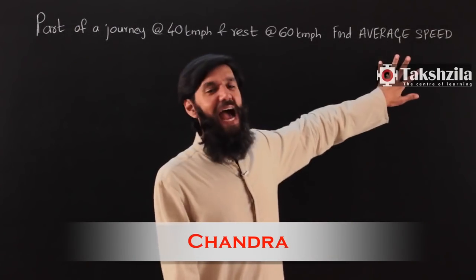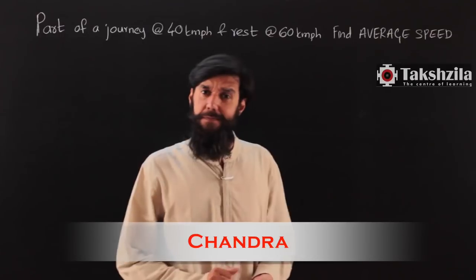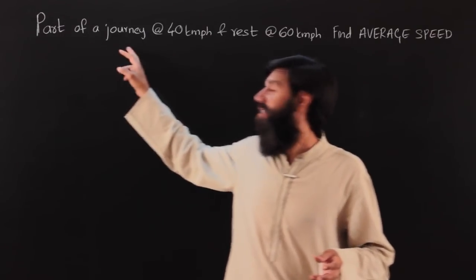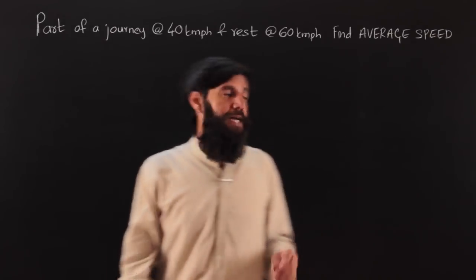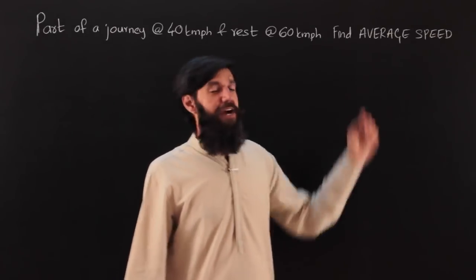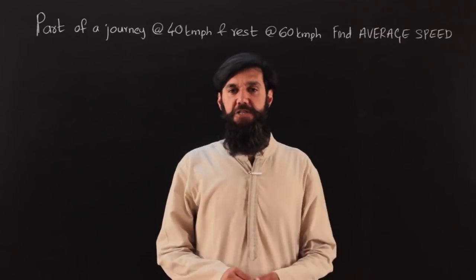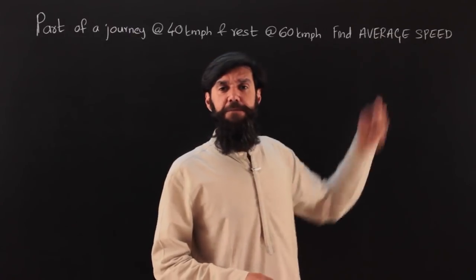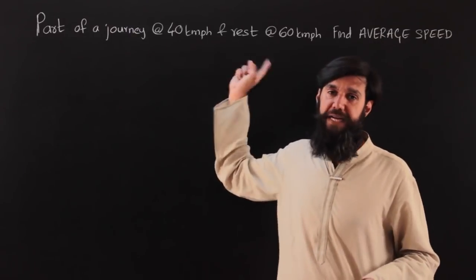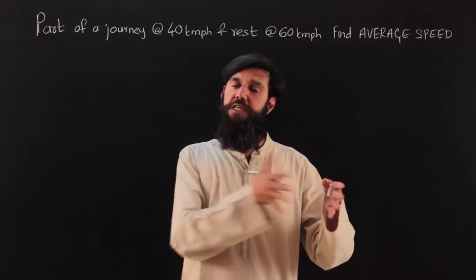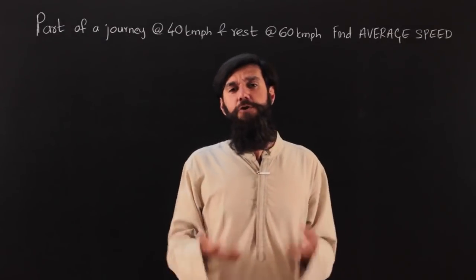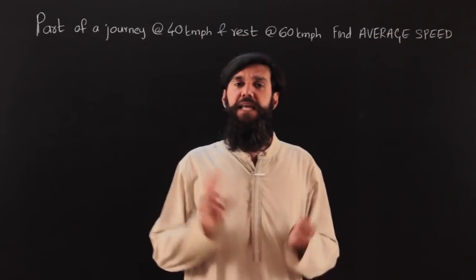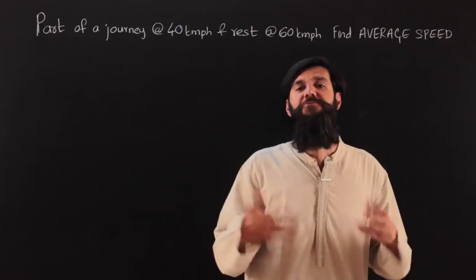This part is about average speed. We'll take a standard example: part of a journey I cover at 40 kilometers per hour and the rest at 60 kilometers per hour — find the average speed for the entire journey. Needless to say, if the question is about average speed, there necessarily have to be at least two speeds. If I travel the whole journey at a uniform speed, the average speed is just that same uniform speed. So for a question on average speed to make sense, there needs to be a minimum of two different speeds.